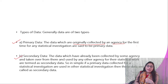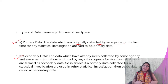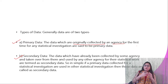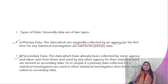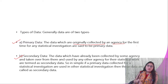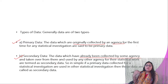Secondary data is data that is already collected. It has been collected before by other people and can be published in the form of books, journals, websites, magazines, newspapers, or any other place. If information is already available from some source, it comes under secondary data — already collected by some agencies.